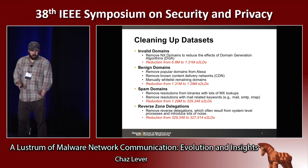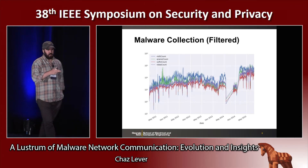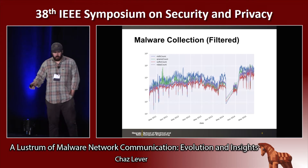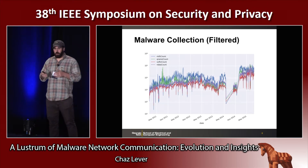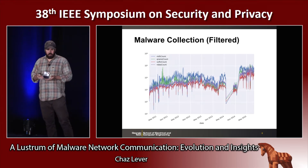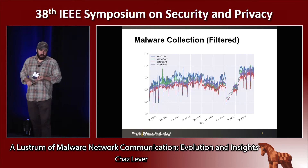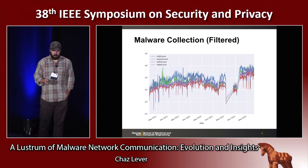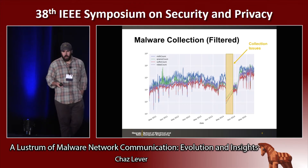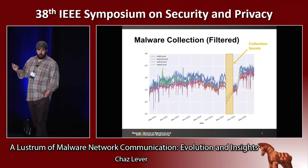When we looked at the evolution of our data set over time after doing all the filtering, we see a consistent growth in the number of samples, number of domains queried, and number of IP addresses. You'll notice there's a drop in 2014 — unfortunately, we didn't solve security that year; we just had a collection issue with our infrastructure.